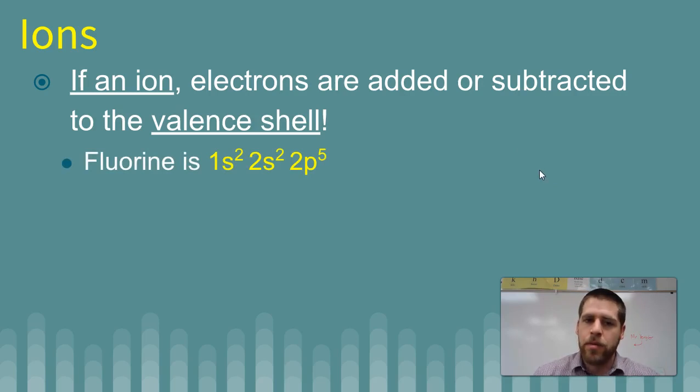So, fluorine, for example, grab your periodic table and look at where fluorine is on your periodic table. It'd be 1s2, 2s2, 2p5. The ion, though, it would gain one more electron, and so it would be 2p6.